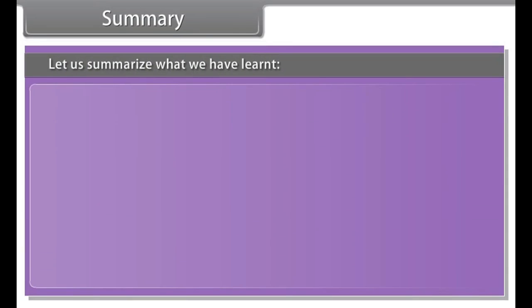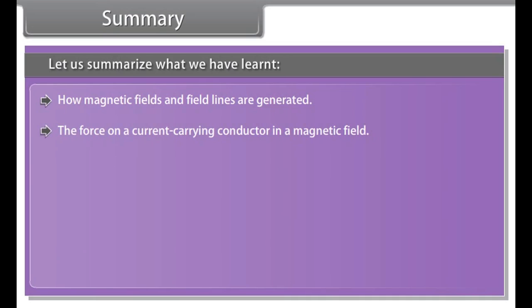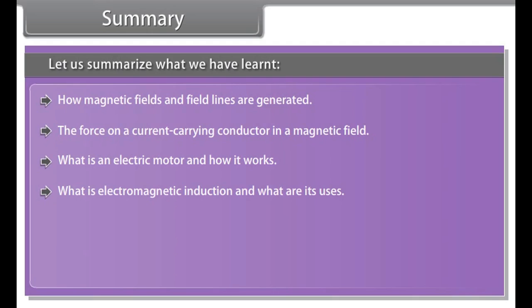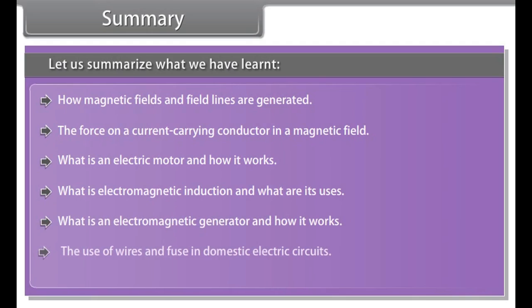Summary. Let us summarize what we have learned. How magnetic field and field lines are generated. The force on a current carrying conductor in a magnetic field. What is an electric motor and how it works? What is electromagnetic induction and what are its uses? What is an electromagnetic generator and how it works? The use of wires and fuse in domestic electric circuits.